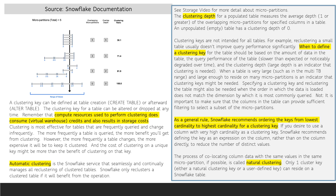Snowflake recommends defining the key as an expression on the column rather than on the column directly to reduce the number of distinct values. The process of co-locating column data with the same values in the same micropartition is called natural clustering.